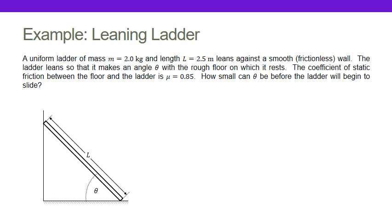I've drawn my picture. I've got a ladder leaning against a wall, resting on the floor. As I read along, I notice that this is a uniform ladder. That means it has uniform mass density, which means that the center of mass of the ladder is in the middle of the ladder. That's important because the force of gravity acts through the center of mass.